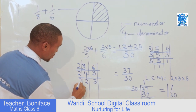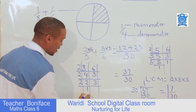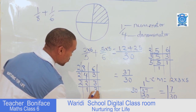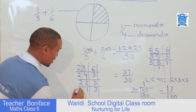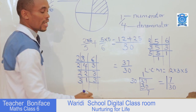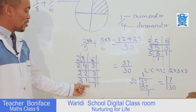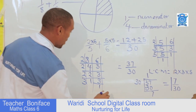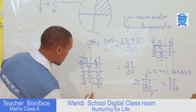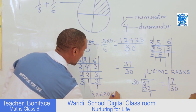We still continue with two. How many times does two go into two? One. How many times does two go into three? It is impossible, so we retain three. We continue by three now. How many times does three go into three? One. Then we have reduced all the denominators into one, as you can see. So the LCM of eight and six is two multiplied by two multiplied by two multiplied by three.